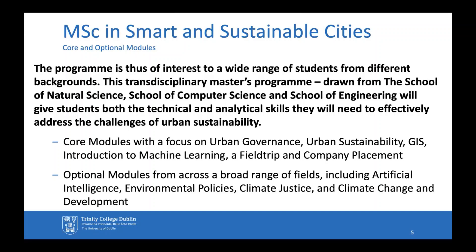The urban governance component will give you skills in terms of understanding how the different elements of the city come together — the who, the management, the power dynamics, how different forms of governance work at different scales, how they work in different parts of the world. Linked in with this, we can think about urban sustainability — the sustainability measurements required in terms of understanding what the world could be, and the elements that would come together to make urban areas more sustainable. Whether it be upgrading your technical skills in terms of GIS and introduction to machine learning, or if these things are new to you, these will give you the more technical elements required for a cohesive understanding of what smart and sustainable cities are about. The field trip and the company placement are designed to give you an understanding of how these things work in everyday life.